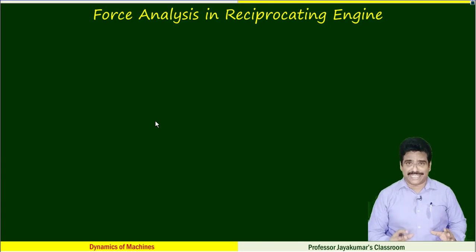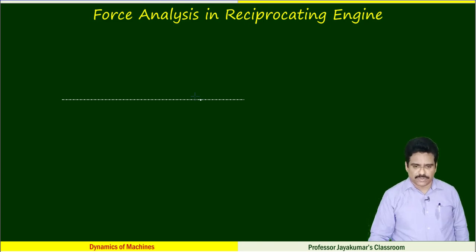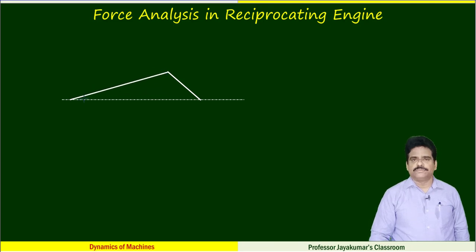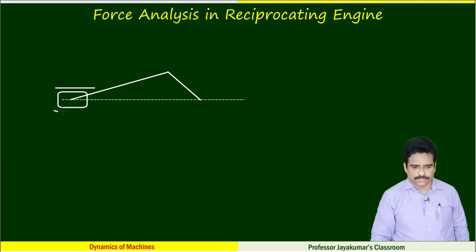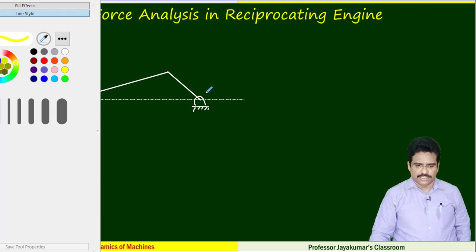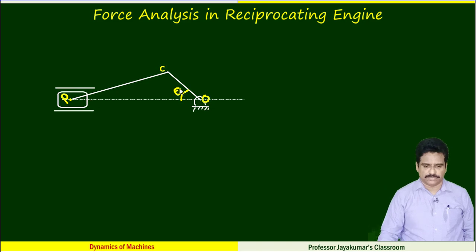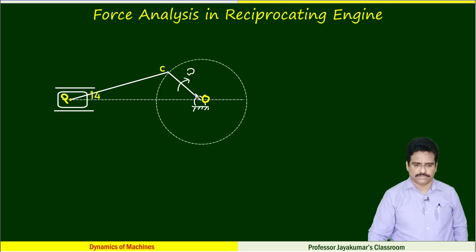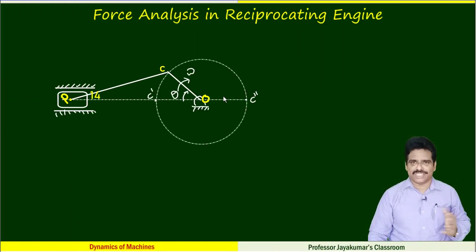We will do the configuration diagram of an IC engine. Let us draw the line of stroke, and arbitrarily draw a crank and connecting rod. Let this be O, this C, and this P. So this is the configuration diagram of a reciprocating engine. Shall we see what the various forces acting on them are?